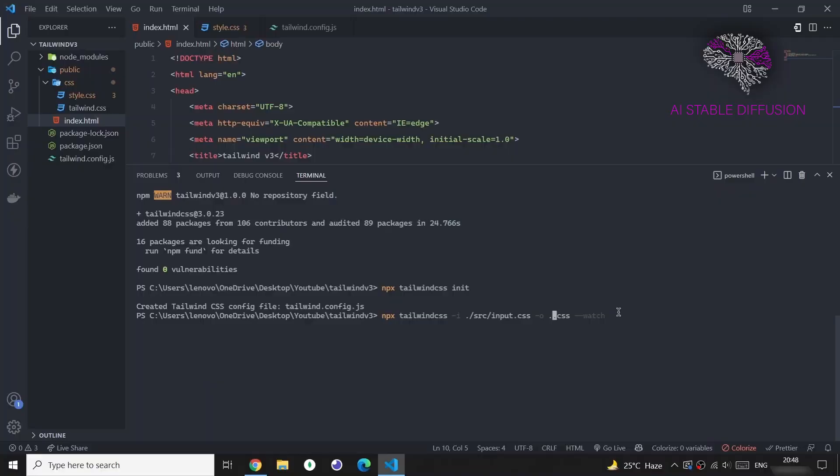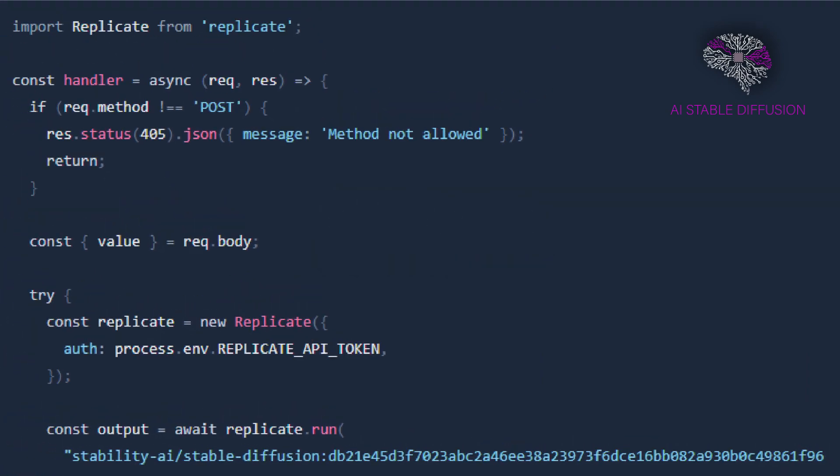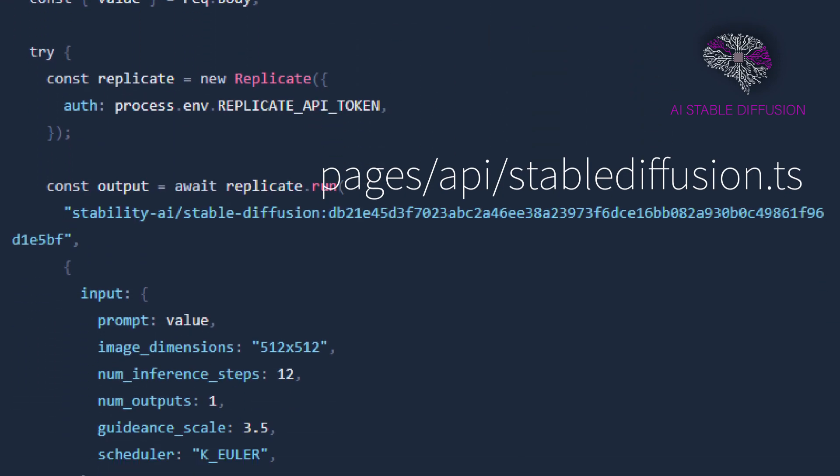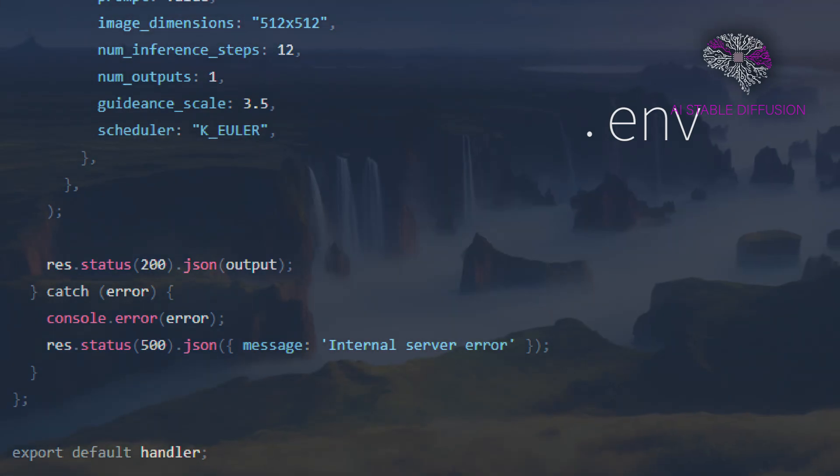Our next step is to create the Stable Diffusion API route. To handle the generation of Stable Diffusion images, we need to develop an API route by adding the following code to a new file called pages forward slash API forward slash Stable Diffusion dot ts. Ensure that the .env file has your replicate API token. Request from the front end to create images using the Stable Diffusion model will be handled by this API endpoint.